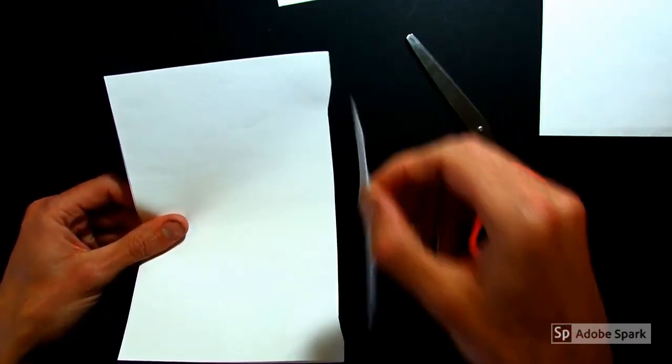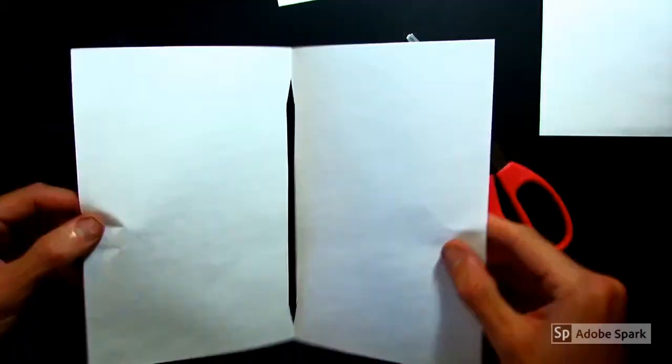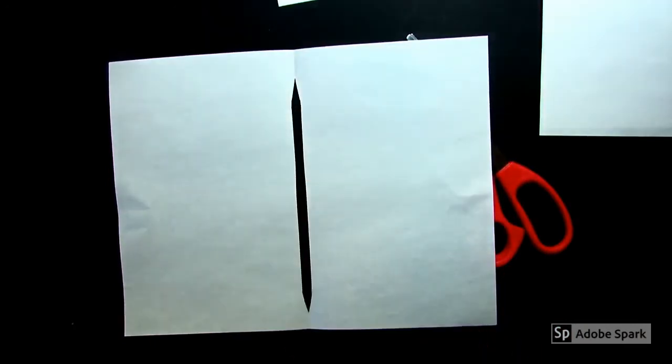So you're left with this piece of scrap paper. And when you open your paper up, you should see this long hole right down the middle. We'll set this piece of paper aside for now.